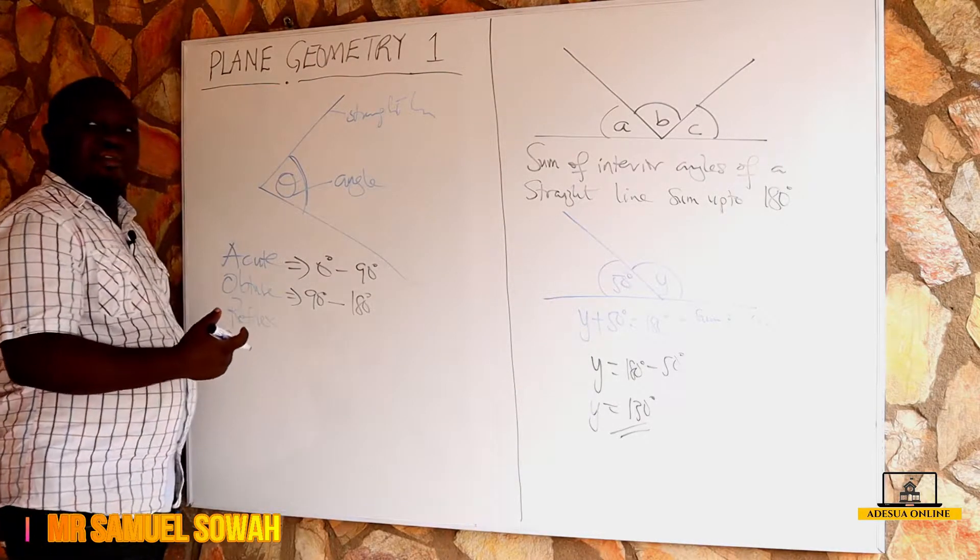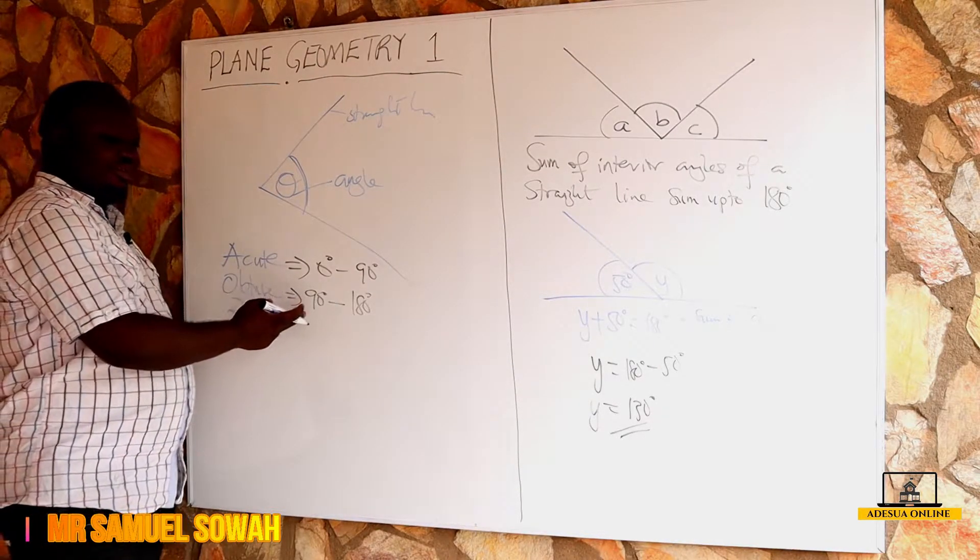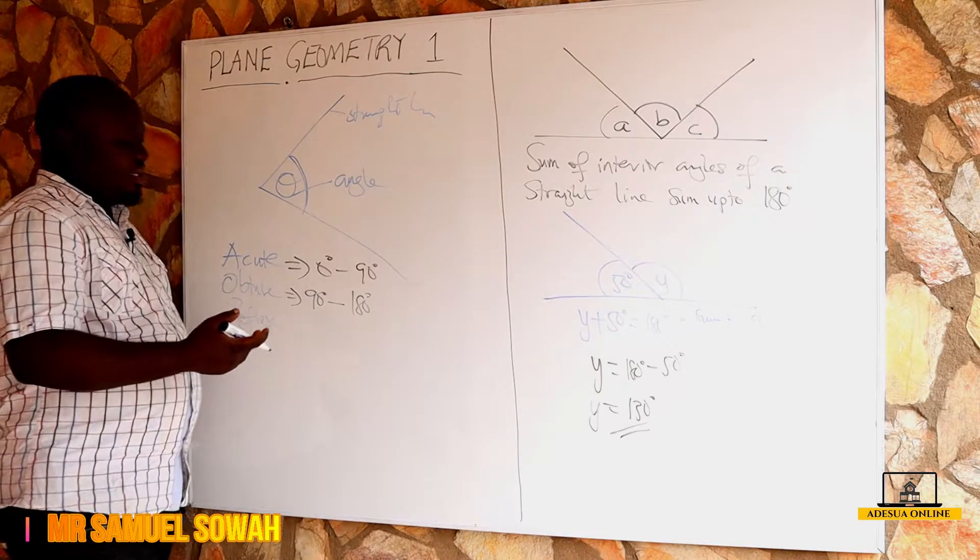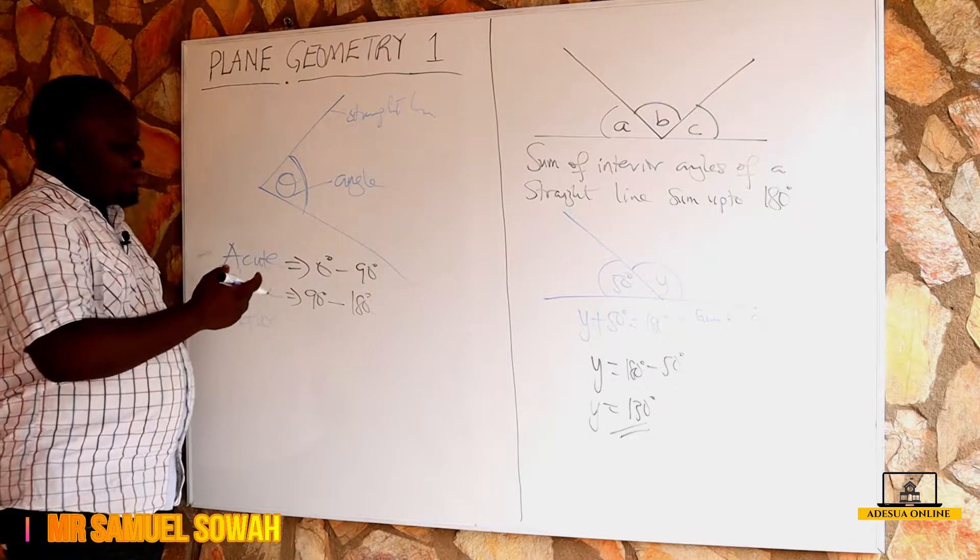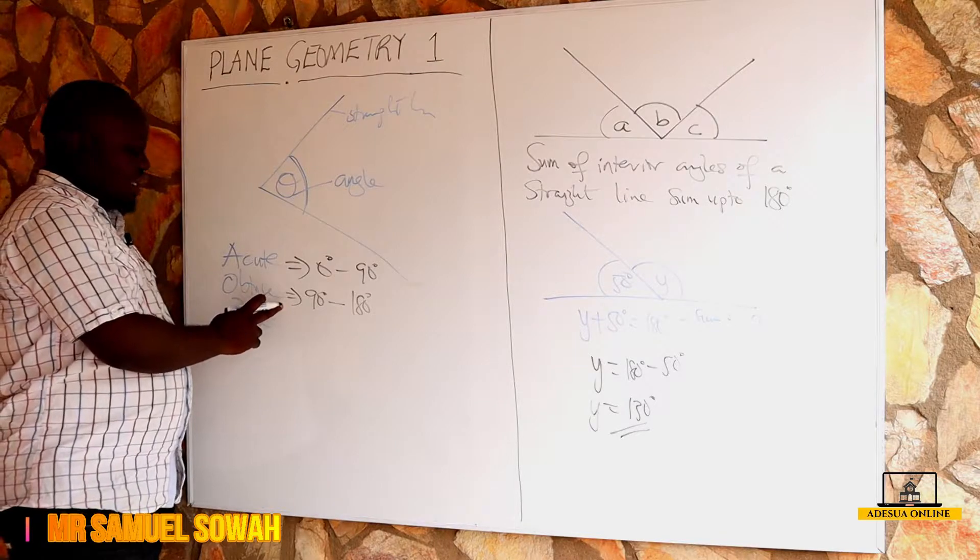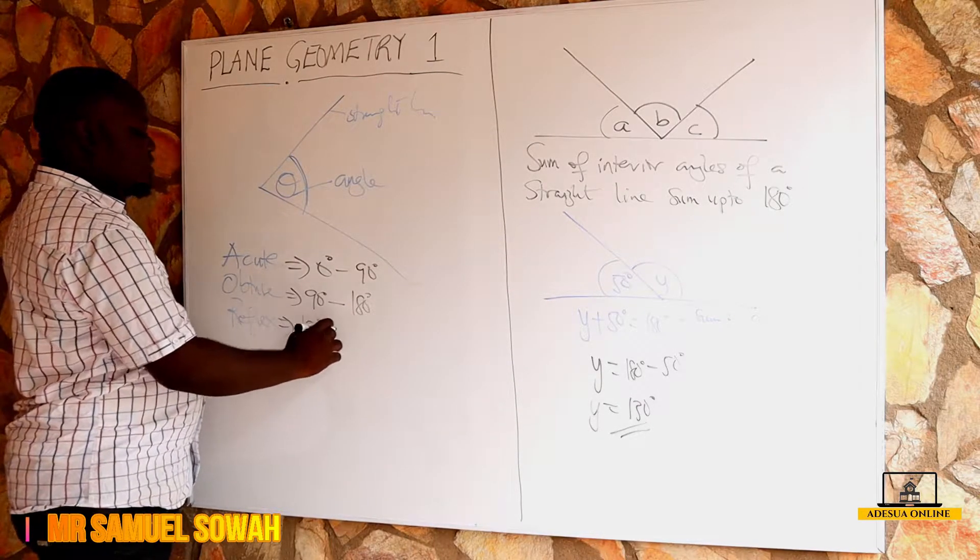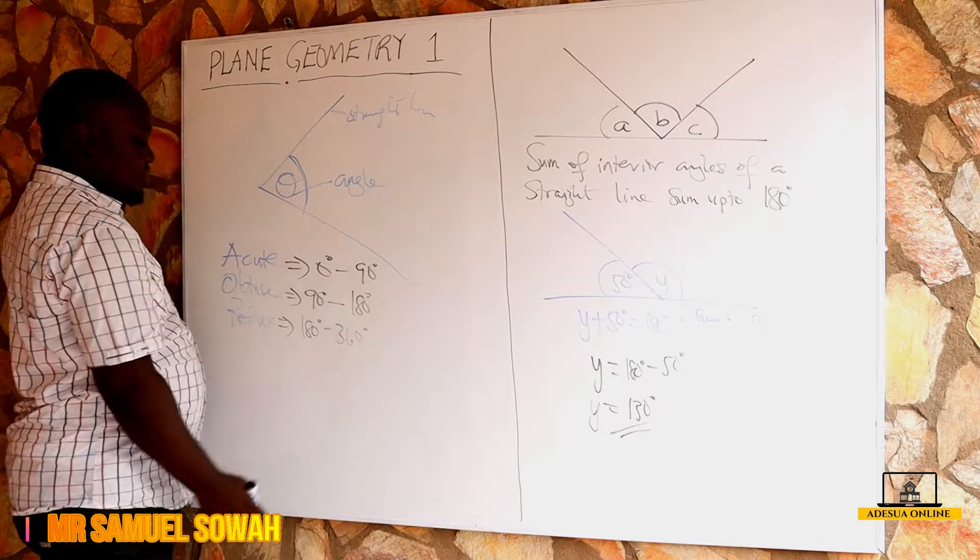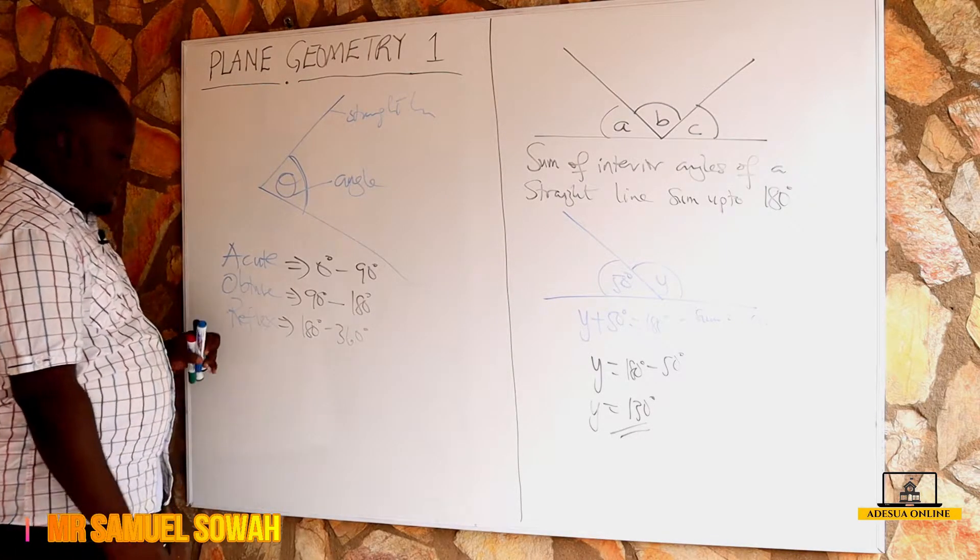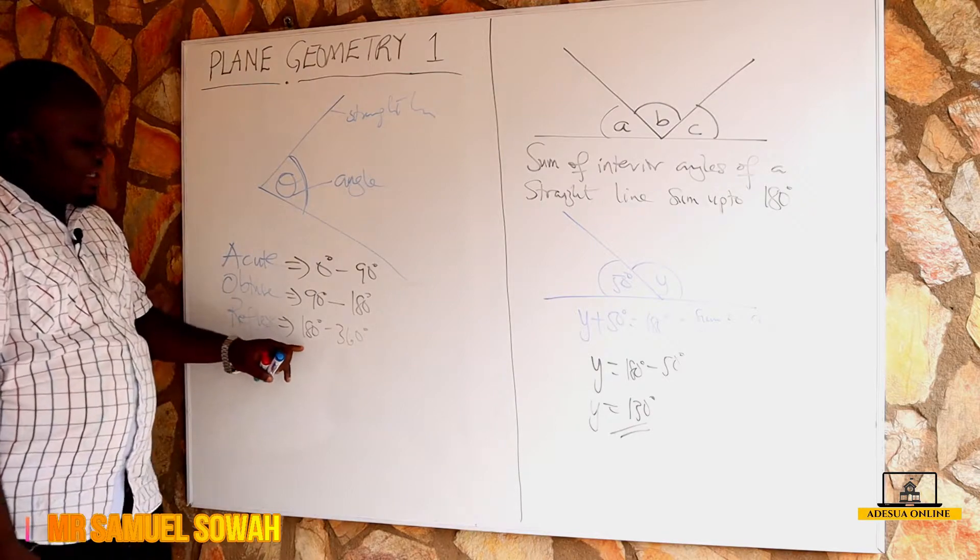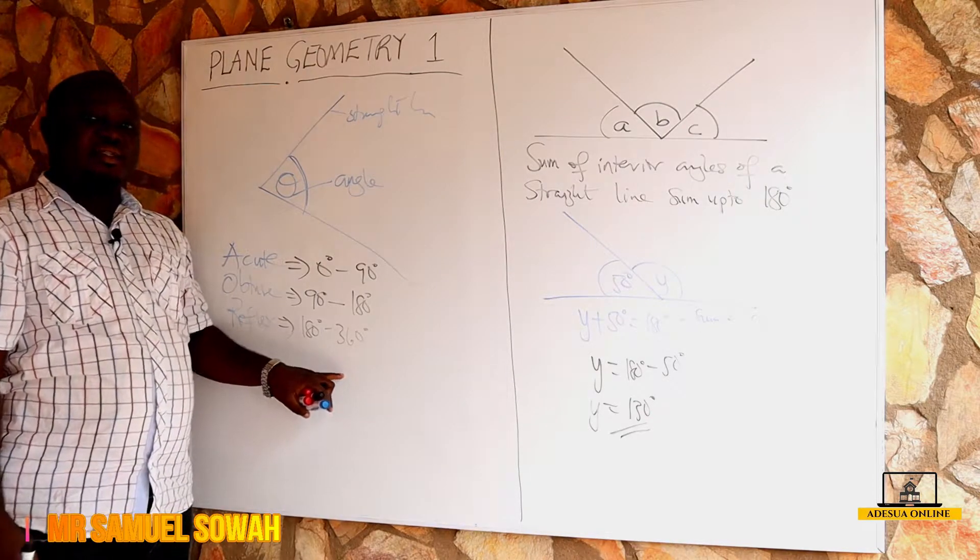So if you have an angle of 155, 165, or 93 degrees, they are all obtuse angles. Then we have a reflex angle between 180 degrees to 360 degrees. So for any reflex angle, we talk about the angle being between 180 to 360 degrees.